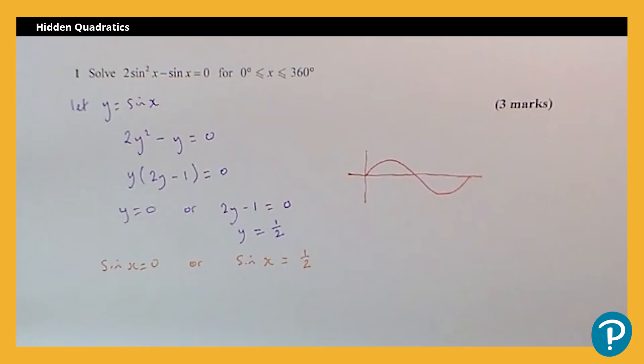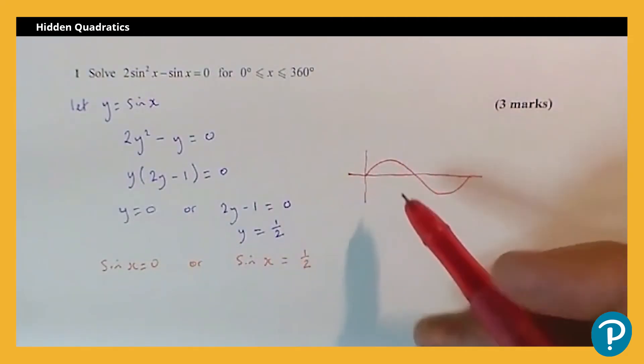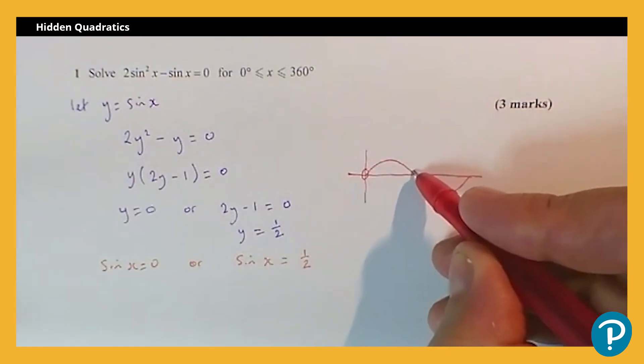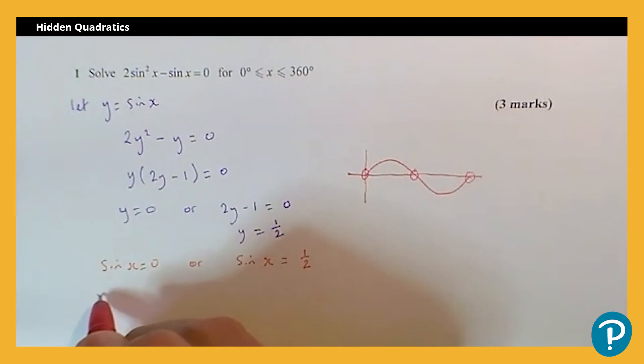So that's the curve I'm interested in, that whole range. So for the first solution, sinx = 0. Where does this graph equal zero? It equals zero here, here, and here. They're values that we should know automatically, so that means x = 0, 180, or 360.